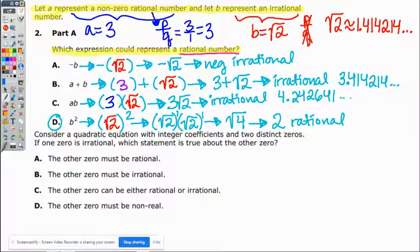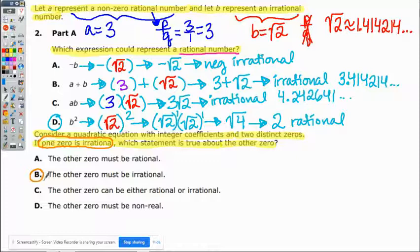Now we have the other version down here, the other question. It says, consider a quadratic equation with integer coefficients and two distinct zeros. If one zero is irrational, which statement is true about the other zero? That is a little confusing. But the answer is that if you have an irrational zero, if the one zero is irrational, then the other zero must also be irrational.